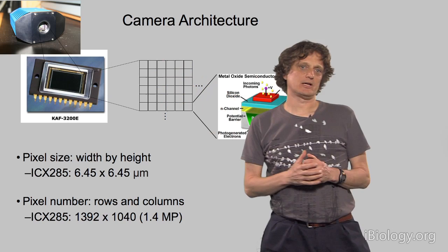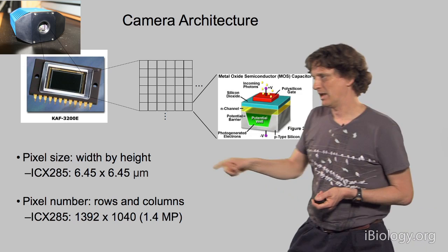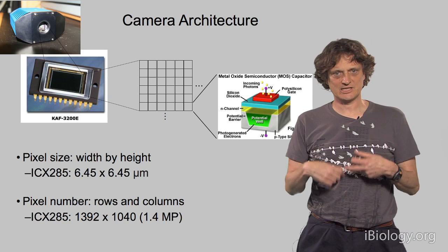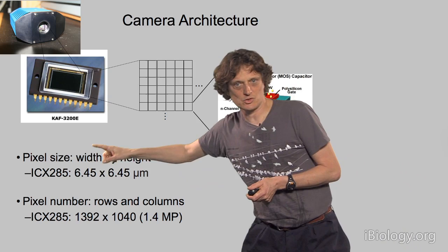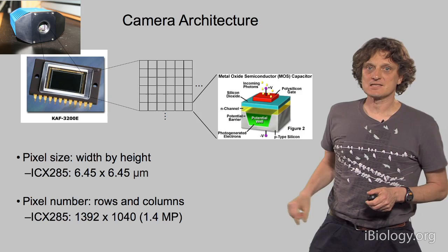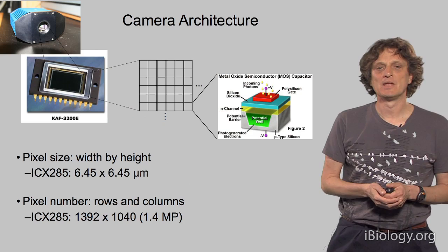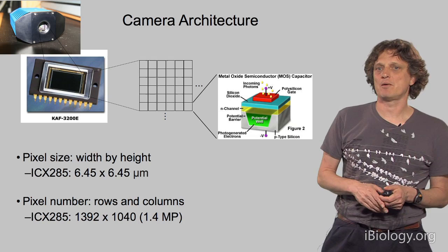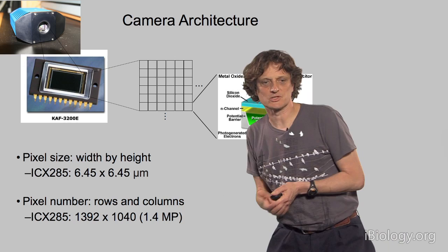There are several important parameters for these pixels. The most basic is pixel size — its width and height. For example, the Sony ICX 285 chip, a CCD chip widely used in microscopy for years, has pixels of about 6.5 microns square. Another important number is how many pixels we have — rows and columns. The ICX 285 has about 1400 columns and about 1000 rows, for a total of about 1.4 megapixels, which is much less than most consumer cameras.